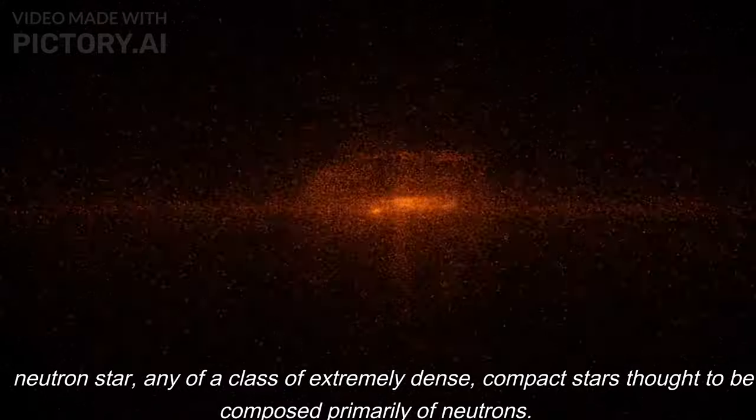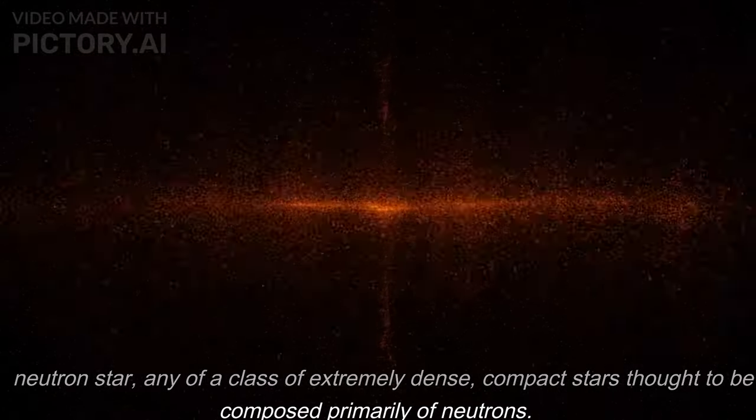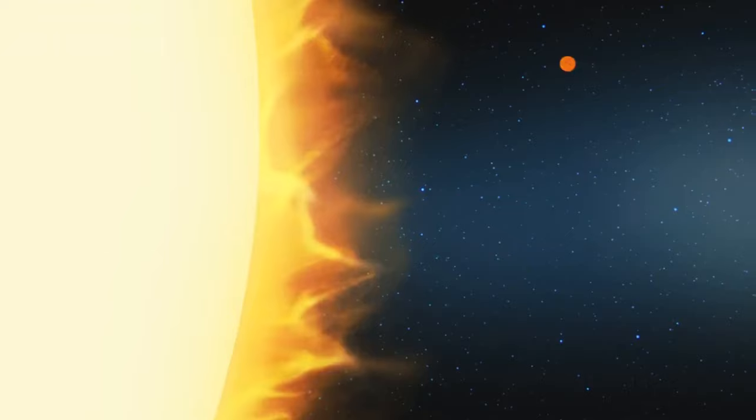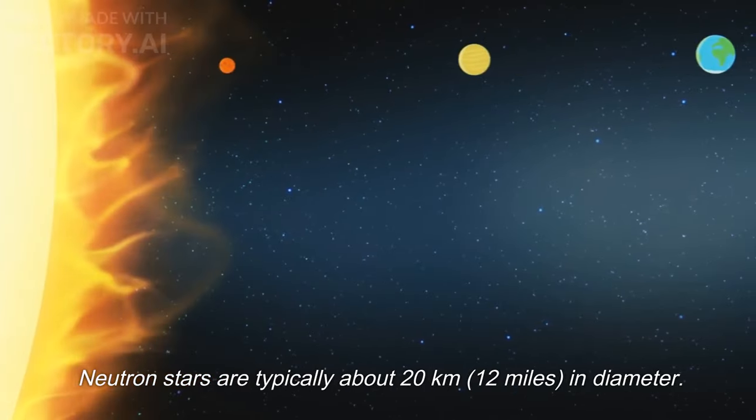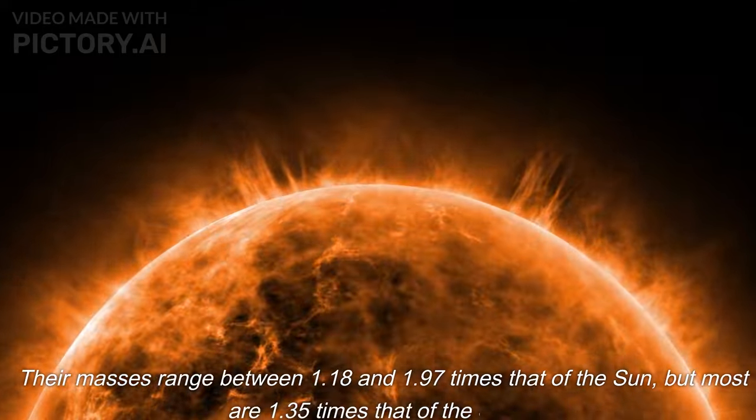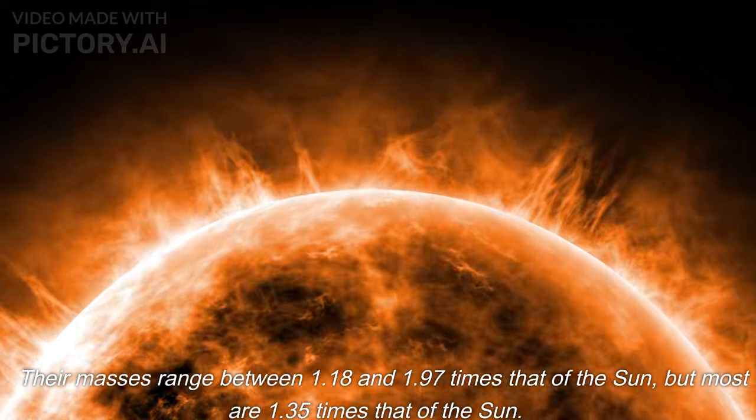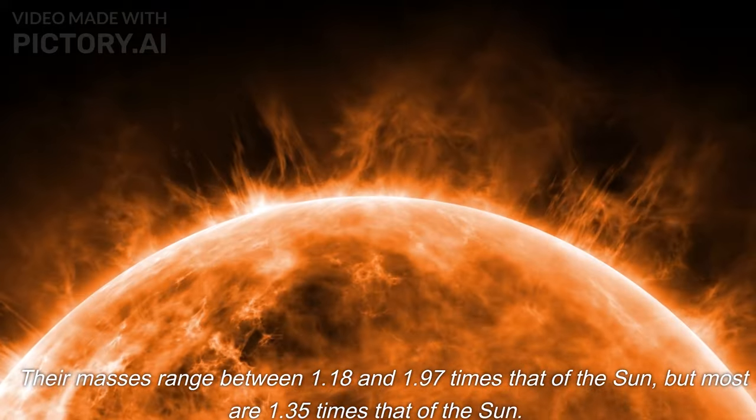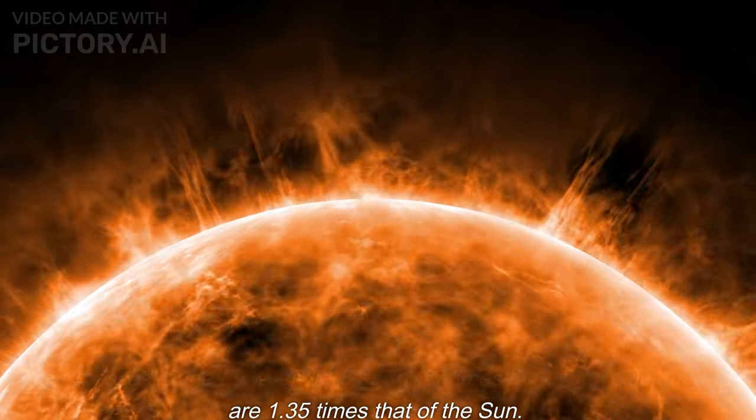Any of a class of extremely dense, compact stars thought to be composed primarily of neutrons. Neutron stars are typically about 20 kilometers, 12 miles, in diameter. Their masses range between 1.18 and 1.97 times that of the sun, but most are 1.35 times that of the sun.